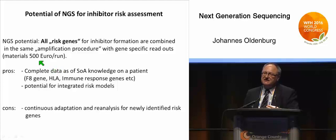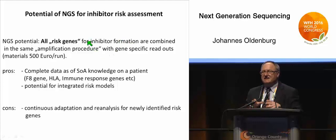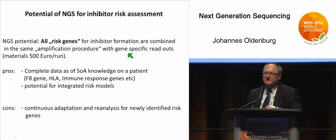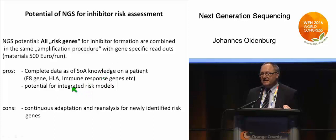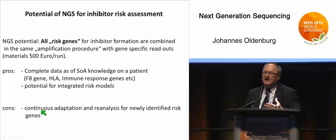The potential of next generation sequencing is that we can combine all known inhibitor formation risk genes into the same amplification procedure. Now, 50 to 100 genes can be analyzed in parallel with a gene-specific readout. This technology costs about 500 euros per run. The advantage is complete state-of-the-art data on a patient covering all genes that may contribute to the immune response, with potential for building integrated risk assessment models. The downside is the need to continuously adapt and re-analyze for newly identified risk genes.